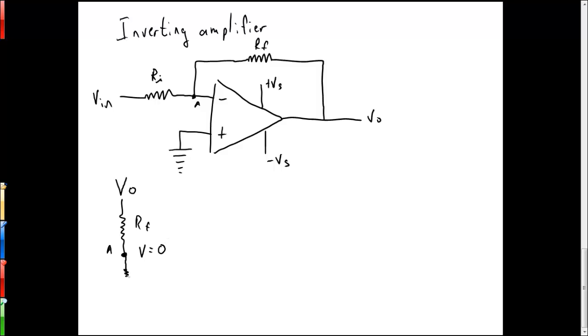And then through another resistor of RI out to V in. So when this is the case, we know that the current going through resistor RF is the same as the current going through resistor RI.